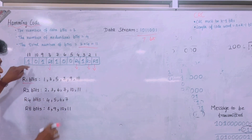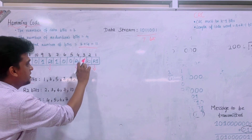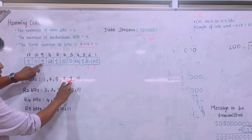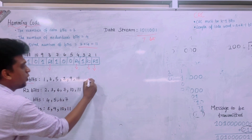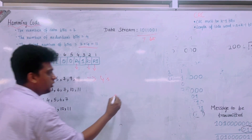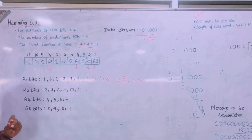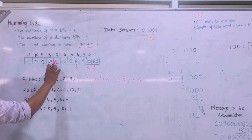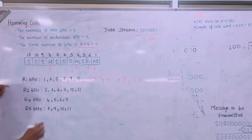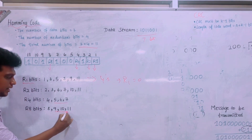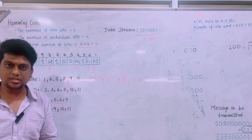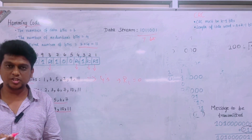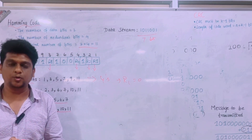Similarly, for R2 we check positions 3, 6, 7, 10, and 11; for R4 we check positions 5, 6, and 7; and for R8 we check positions 9, 10, and 11. We count the number of ones at each set of positions: if even, the redundant bit is 0; if odd, it is 1. This procedure locates and corrects errors in the received data. Thank you for watching the video.